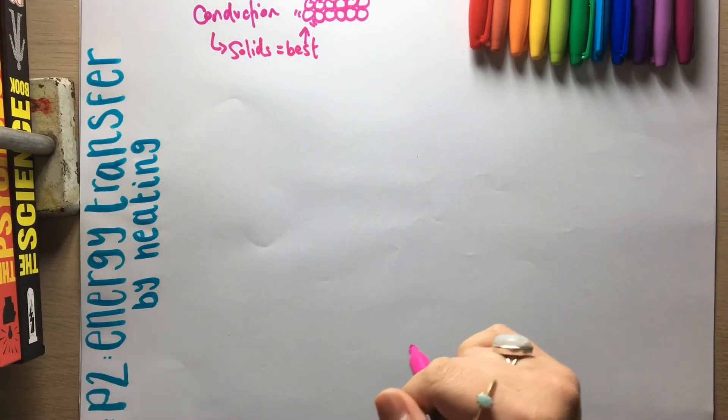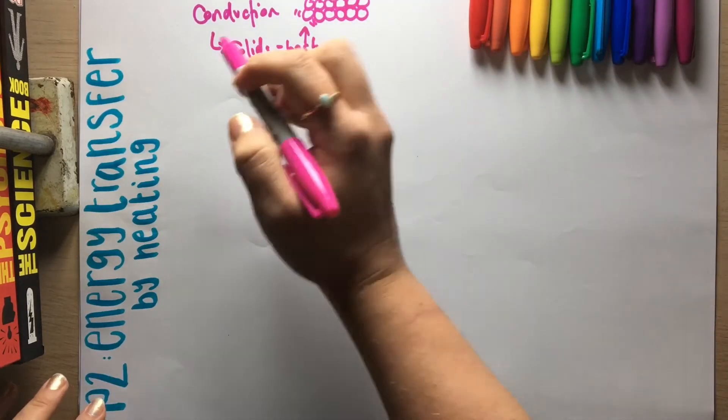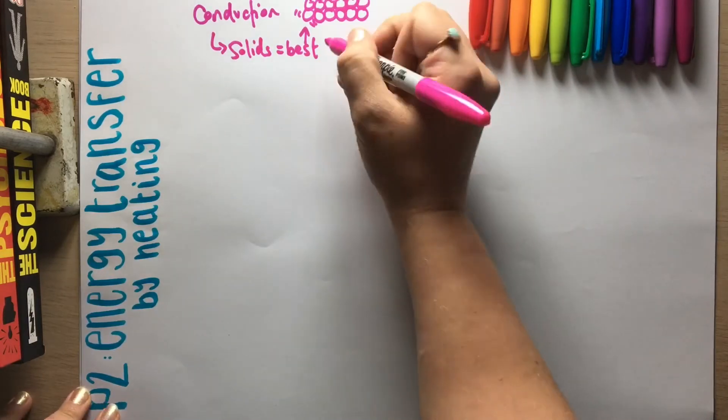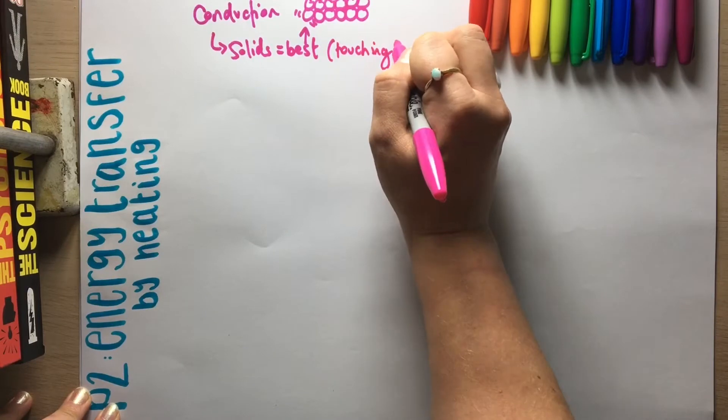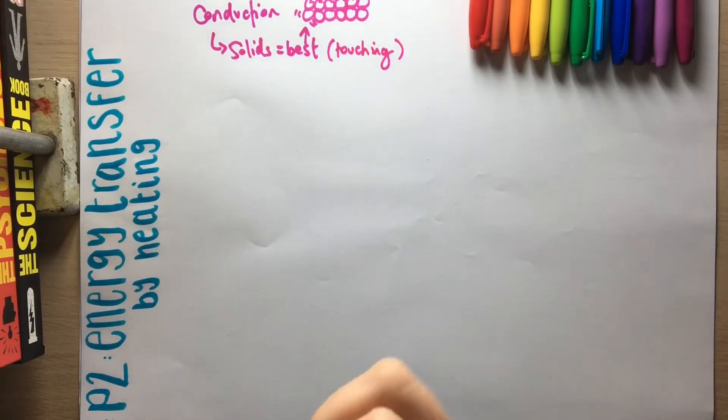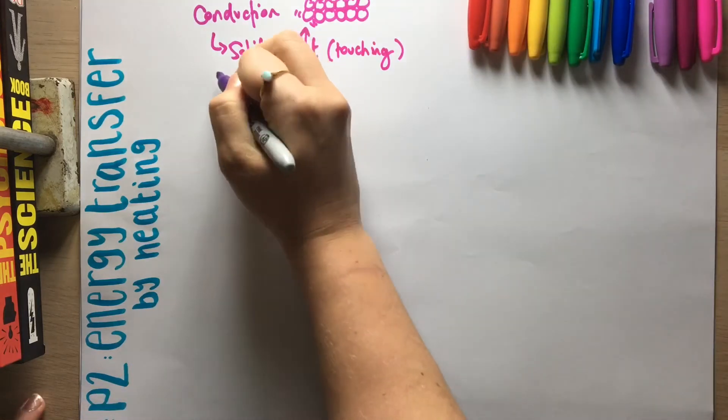It does happen in liquids to a certain extent, doesn't really happen in gases because those particles don't really touch each other because they're so far apart. So the vibrations are passed along and best in solids, like I say, because they are touching. So we also have convection.